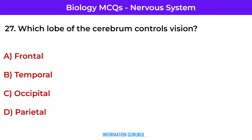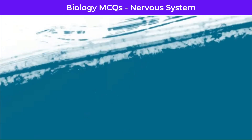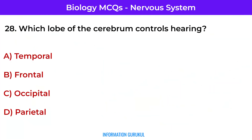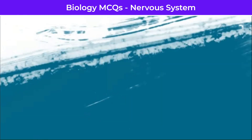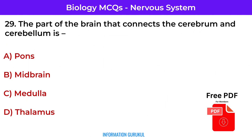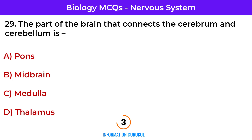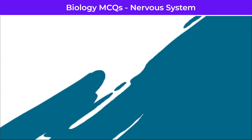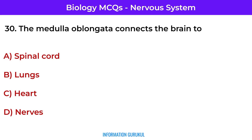Which lobe of the cerebrum controls vision? Occipital. Which lobe of the cerebrum controls hearing? Temporal. The part of the brain that connects the cerebrum and cerebellum is the pons. The medulla oblongata connects the brain to the spinal cord.